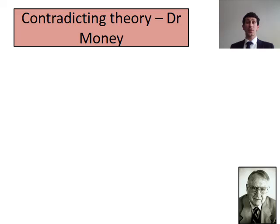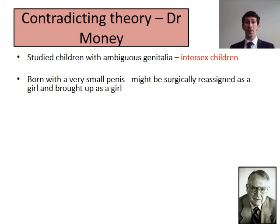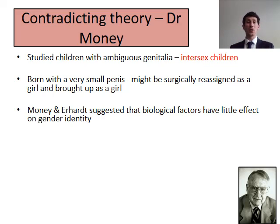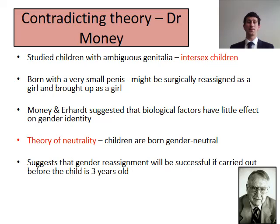We're now going to look at a contradictory theory put forward by Dr. Money. Dr. Money studied children with ambiguous genitalia — sometimes called intersex children. For example, a child born with a very small penis, possibly due to lower prenatal testosterone, might be surgically reassigned and brought up as a girl. Dr. Money and Dr. Ehrhardt believed that biological factors had very little effect on gender identity — it was all due to social factors. Their theory of neutrality stated that children were born gender neutral, and any child can be socialised to become masculine or feminine. They said that if gender reassignment occurred before the age of three, it would be successful.